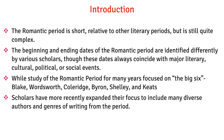The Romantic period is short relative to other literary periods, but is still quite complex. The beginning and end dates of the Romantic period are identified differently by various scholars, though these dates always coincide with major literary, cultural, political, or social events. While study of the Romantic period for many years focused on the Big Six — Blake, Wordsworth, Coleridge, Byron, Shelley, and Keats — scholars have more recently expanded their focus to include many diverse authors and genres of writing from the period.